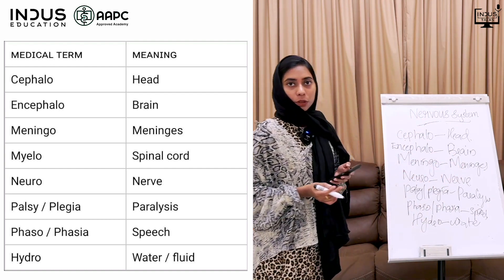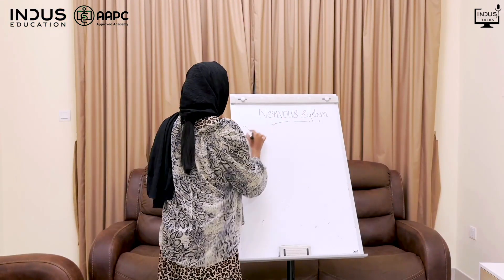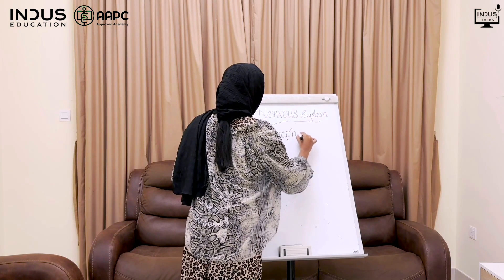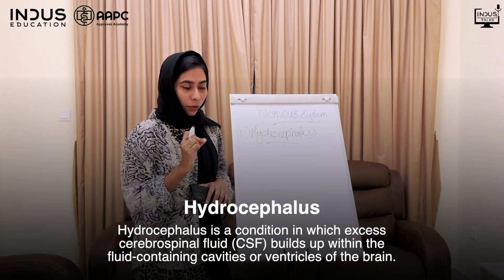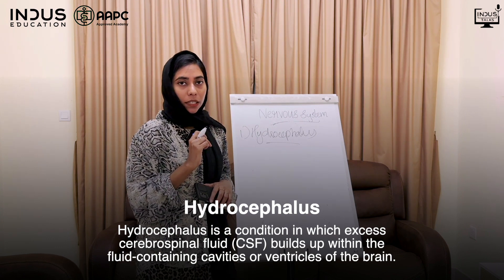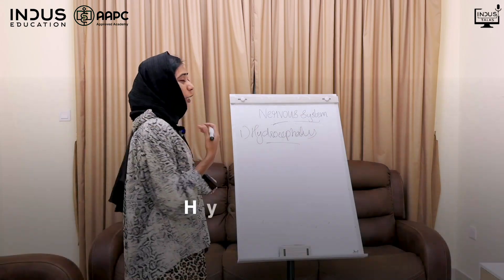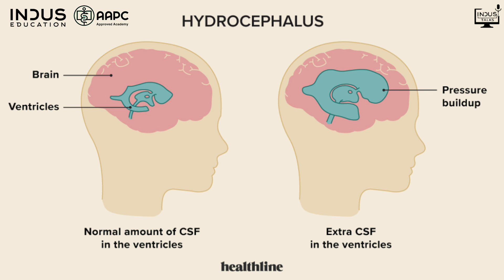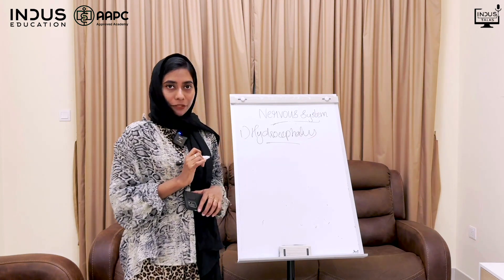Water in the head is called Hydrocephalus. Let's look at disease conditions. The first disease condition is Hydrocephalus. In our brain, there is a fluid called CSF — Cerebro-Spinal Fluid. In hydrocephalus, when this fluid accumulates in the ventricles of the head, it causes enlargement of the head.